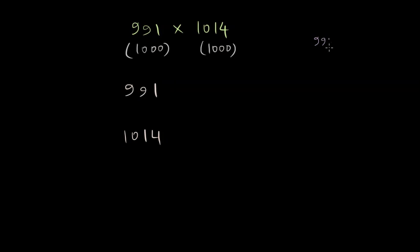And now we will write these two numbers in a vertical fashion: 991, 1014. And let's write the supplement for both. The supplement for 991 is going to be 991 minus 1000, which is minus 9. And the supplement for 1014 is going to be 1014 minus 1000, which is plus 14.